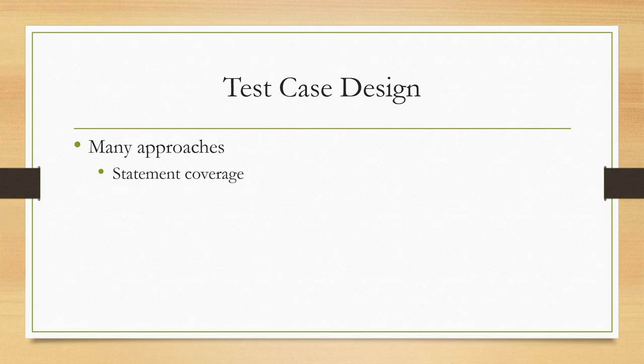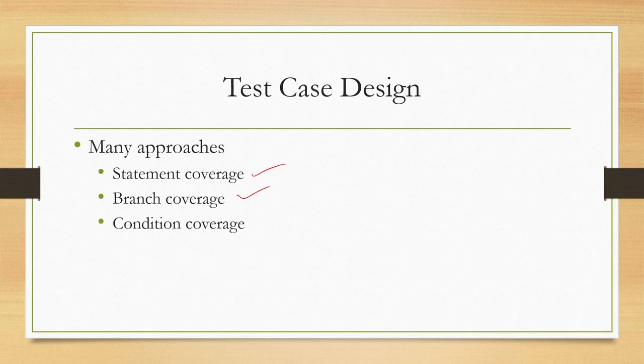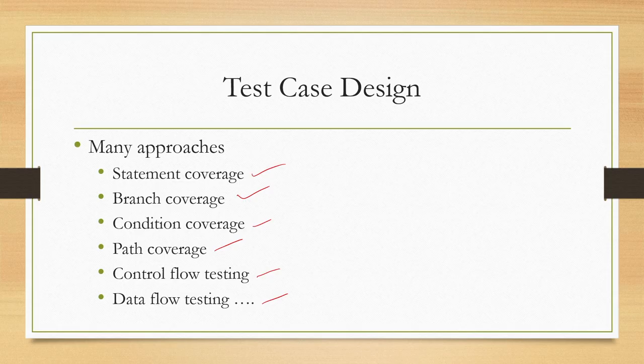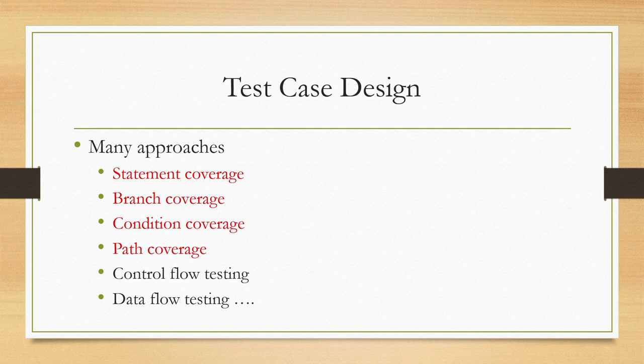Keeping this objective in mind, we can approach test case design in several ways. There are many approaches: statement coverage, branch coverage, condition coverage, path coverage, control flow testing, data flow testing, and so on. All of these are methods to achieve the same goal — coming up with test cases that help us execute as many statements as possible to unearth errors in the code. We will be focusing on the first four: statement coverage, branch coverage, condition coverage, and path coverage.